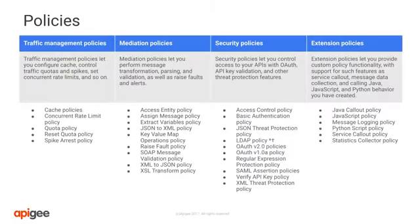Apigee Edge offers many policies. It is relevant for operations to know about some of these. Policies such as cache, key value map, concurrent rate limit, spike arrest, message logging, and statistics collector may apply to some operational requirements. The policies are implemented by API engineers during API proxy development. Operations will act as a stakeholder for applicable requirements and work with the API team for the implementation of specific capabilities.